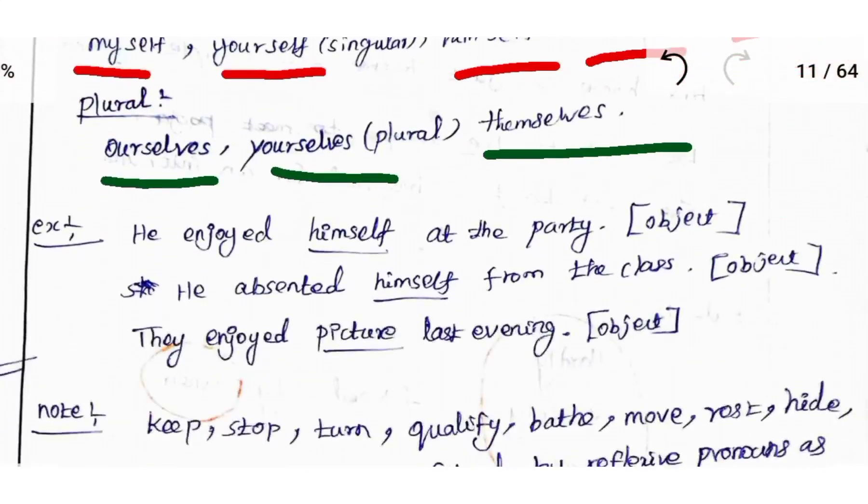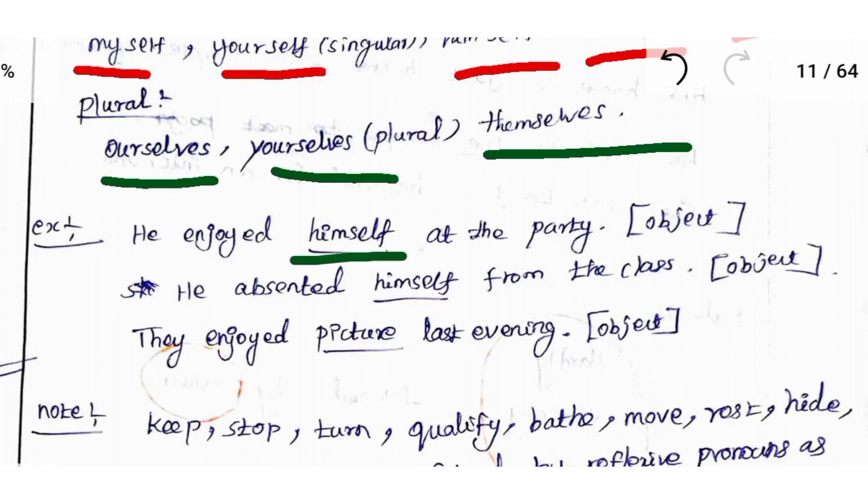Let's see some examples. He enjoyed himself at the party. Here, reflexive pronoun himself acts as object.